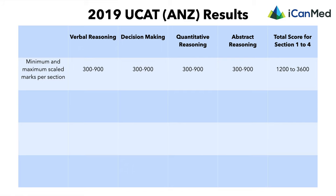If you get zero percent in the UCAT you do not get a score of zero — it will be scaled to 1200. Likewise, a 100% score will be scaled to 3600, and anything in between will fall within that range of 1200 to 3600.